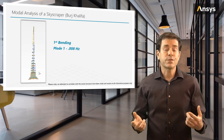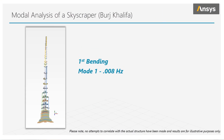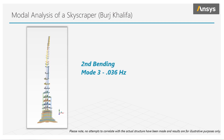Mode number one is the first bending mode, and if you look at its deformed shape or eigenvector, we see it behaves very much like a cantilever beam or even our tuning fork. Recall that we have just as many modes as degrees of freedom, and this model has thousands of degrees of freedom. Mode number three is the second bending mode, and notice it looks very similar to mode number one at the tip, but the middle of the building is moving in the opposite direction to the tip.